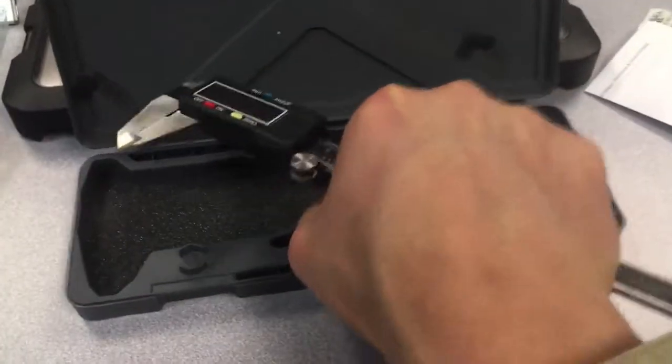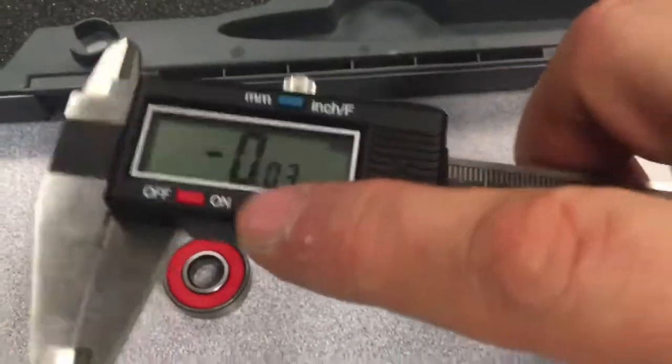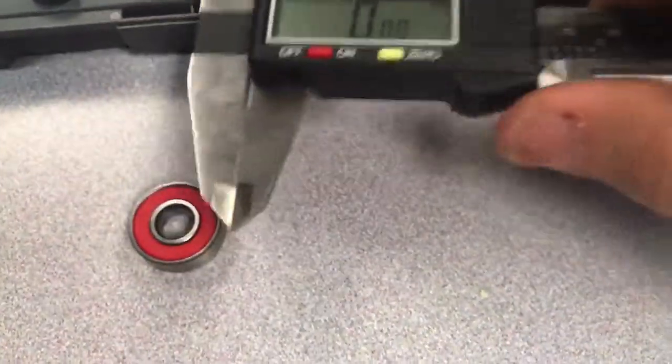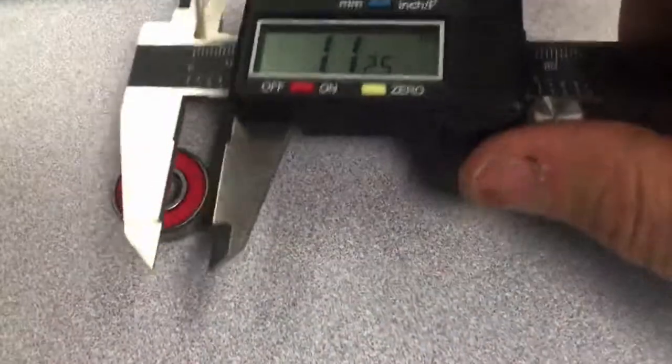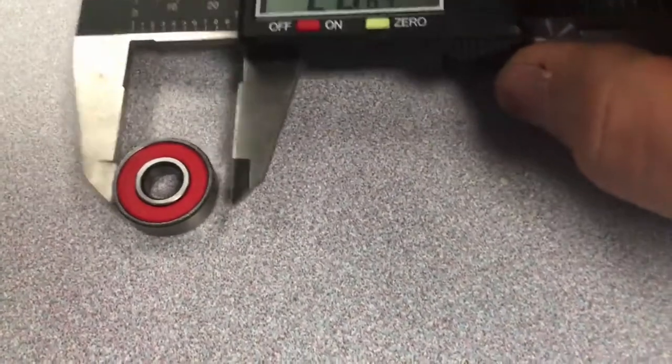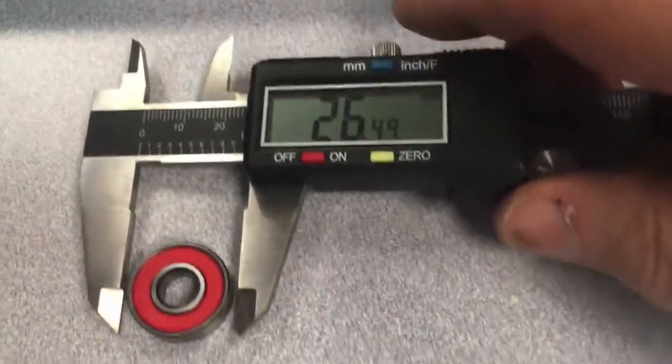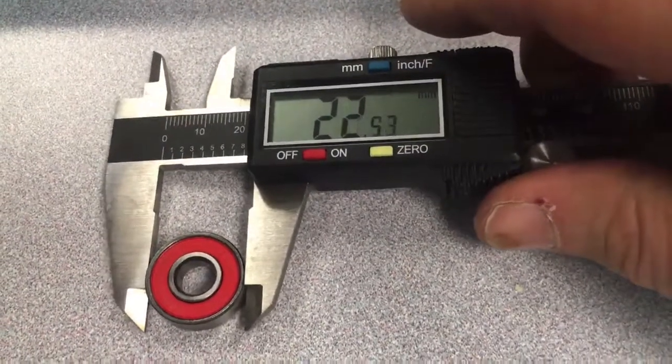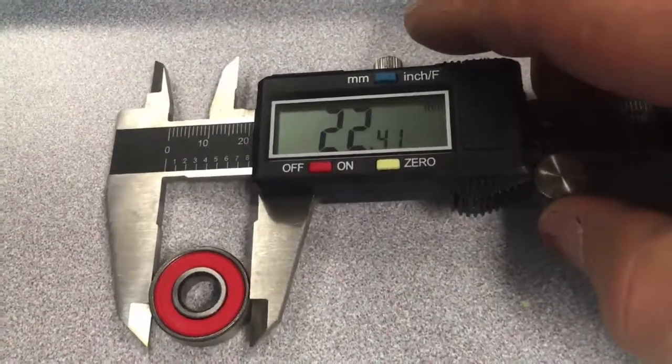To measure, I'm going to take the bearing out. Make sure it's zeroed. Make sure it's in millimeters. Just open it up. And I'm going to close it just slightly, just until it touches.